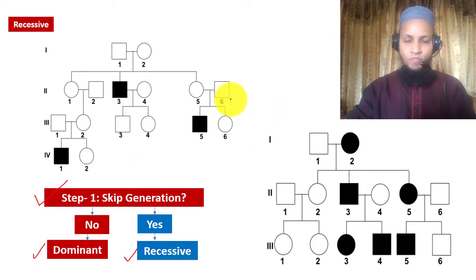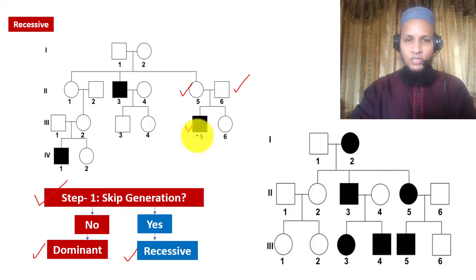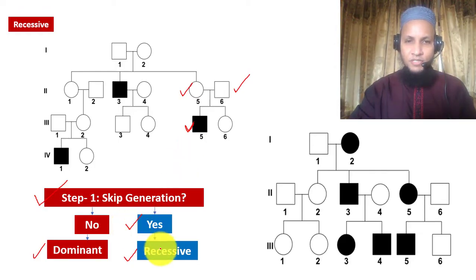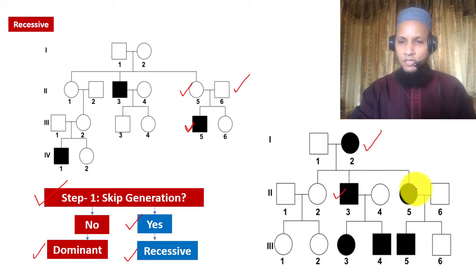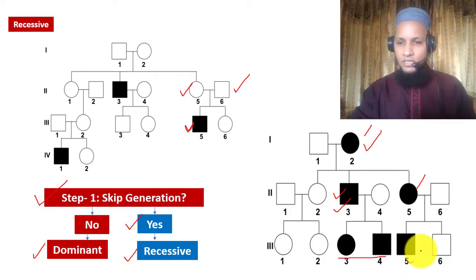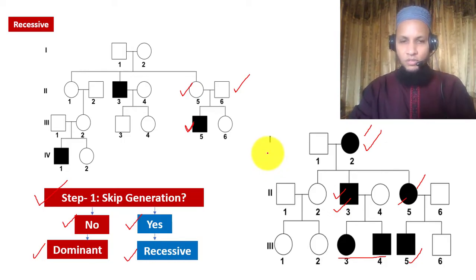The first question is whether there is any skipping of generation. Skipping means if any affected person has both parents unaffected — for example, a person is affected but both mother and father are unaffected. This is called skipping of generation, and it goes in favor of recessive disease. If there is no skipping — if every affected person has at least one affected parent — we call it a dominant disease.